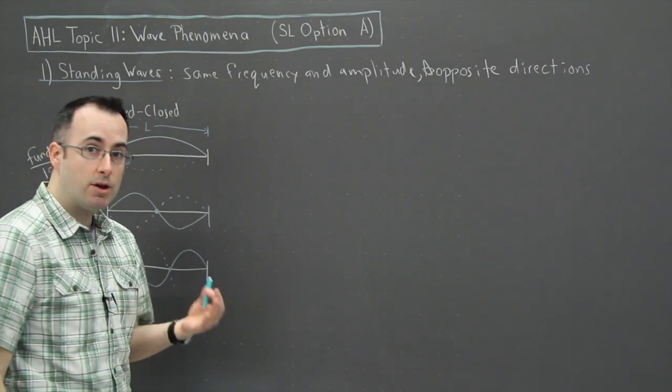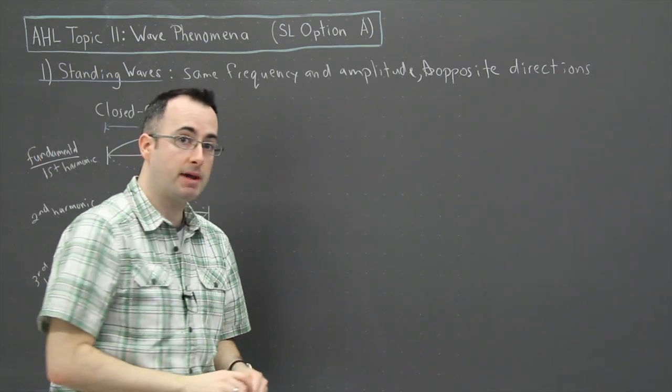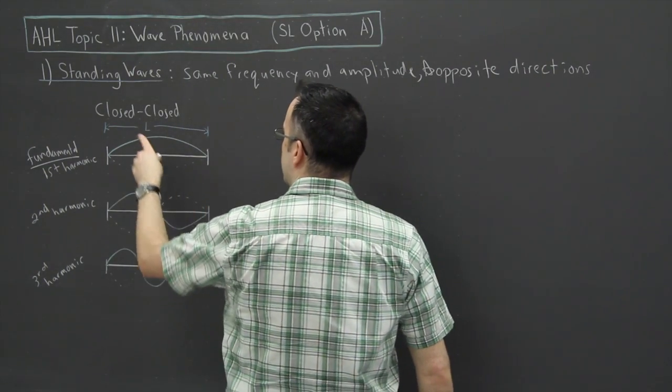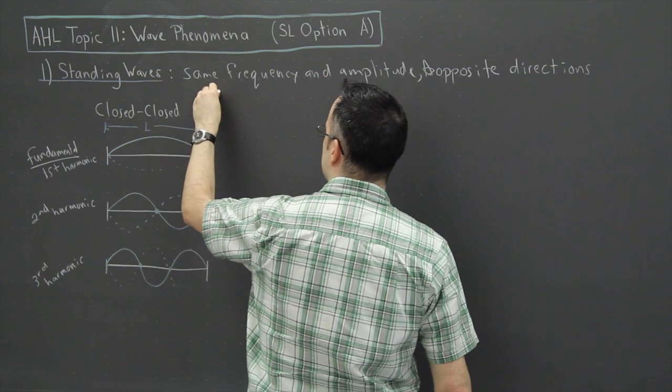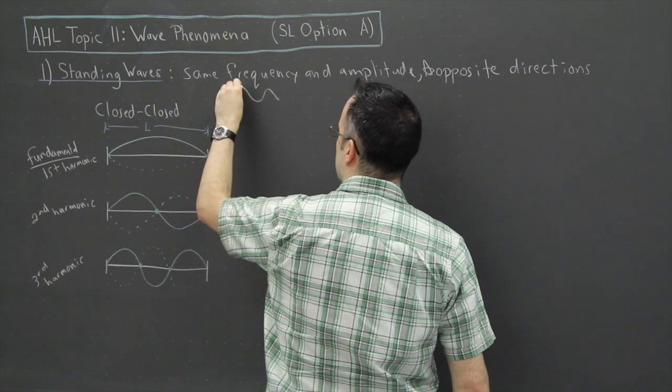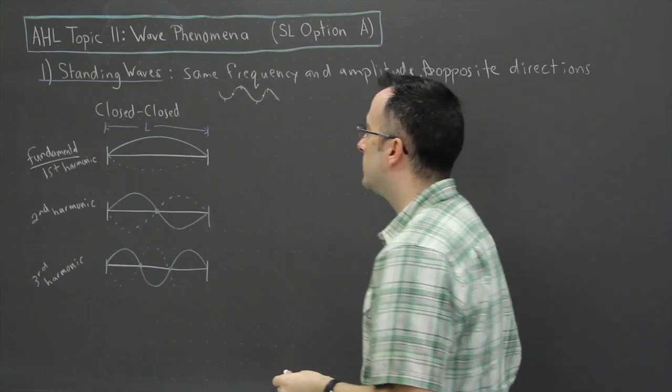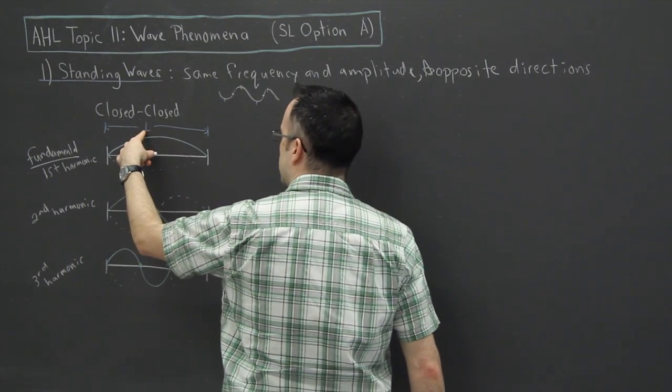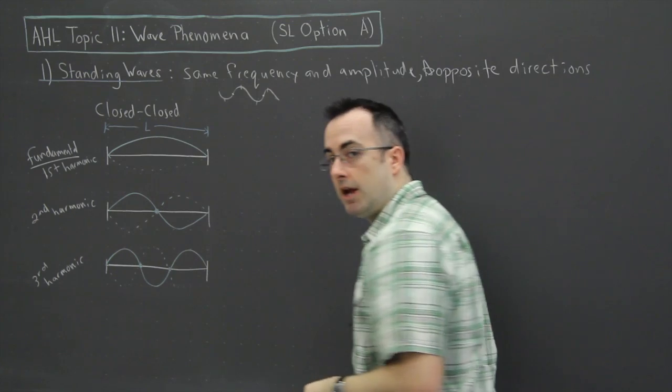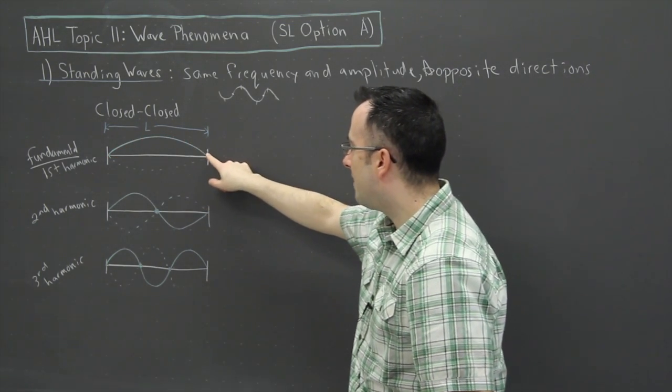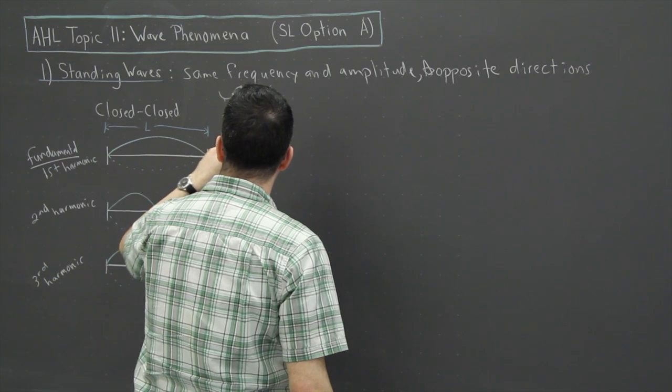So now the key thing here is to look at how much of a full wave we actually have represented here. This length, how does it compare to the wavelength? In other words, the length of this wave. Remember, a wavelength is something that goes like a full oscillation, maybe from top to top, or maybe from a bottom to a bottom, or maybe from here to here. All those would give me a wavelength. So take a look. This length, what fraction of a wavelength is it? We've only got half of a wave. In order to do a full wave, we have to make it go up, and then down, and then finish.